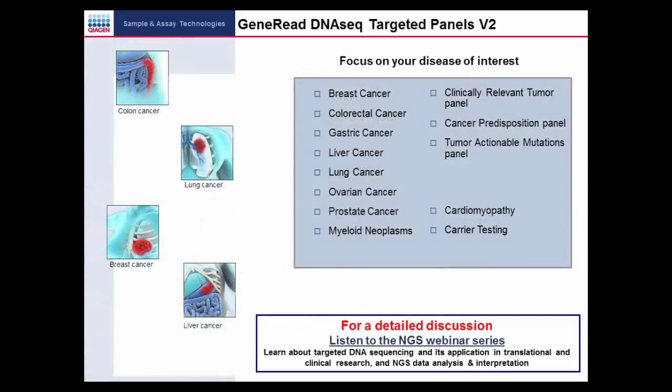For targeted sequencing, Qiagen has developed the GeneRead DNASeq Targeted Panels Version 2. For example, the GeneRead DNASeq Breast Cancer Panel allows you to focus on a number of genes that are known, based on current literature, to be altered in breast cancer, instead of spending your sequencing efforts on the entire genome. For additional information, please listen to the NGS webinar series, which covers targeted sequencing and its application in translational and clinical research, and NGS data analysis and interpretation.